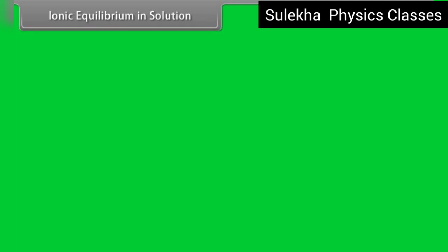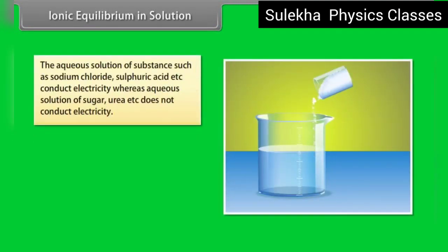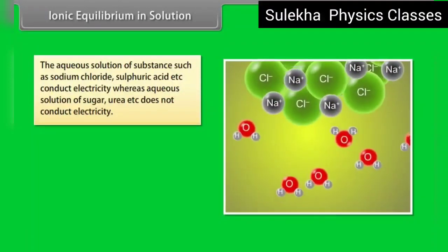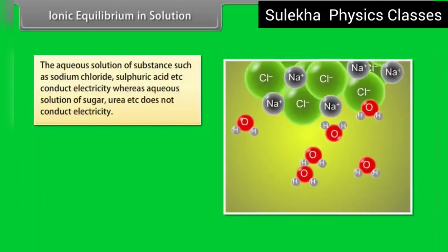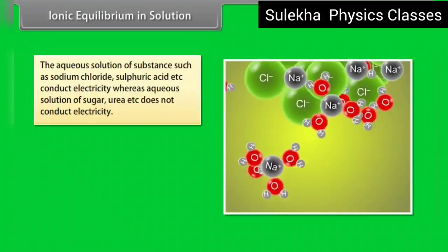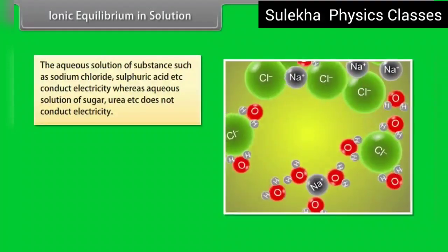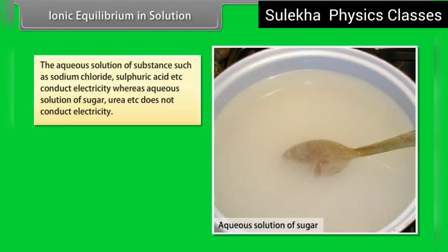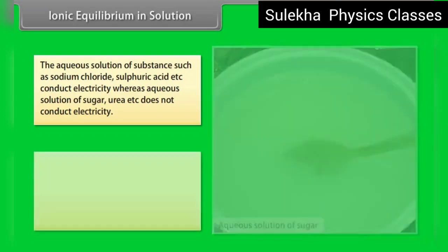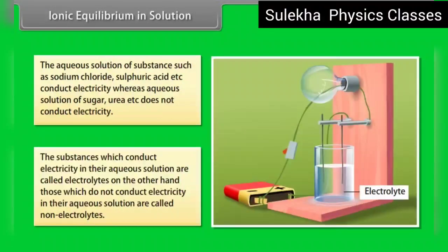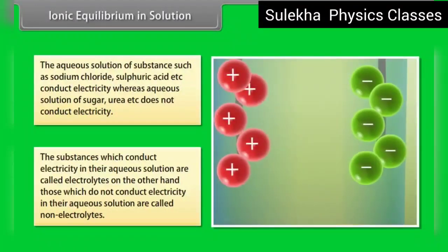Ionic equilibrium in solution. The aqueous solution of substances such as sodium chloride, sulfuric acid, etc., conduct electricity. Whereas aqueous solution of sugar, urea, etc., does not conduct electricity. The substances which conduct electricity in their aqueous solution are called electrolytes. Those which do not conduct electricity in their aqueous solution are called non-electrolytes.